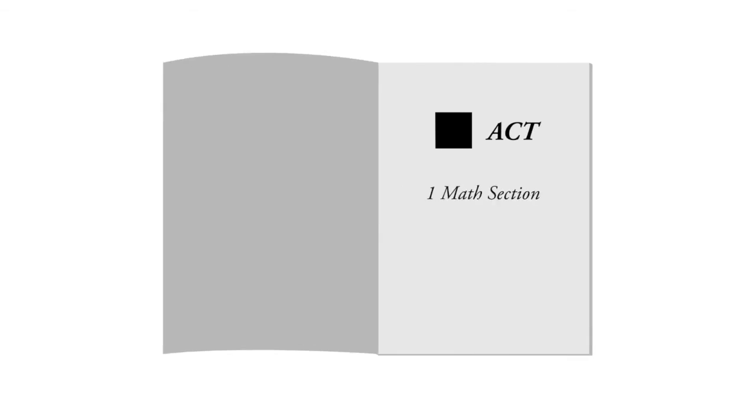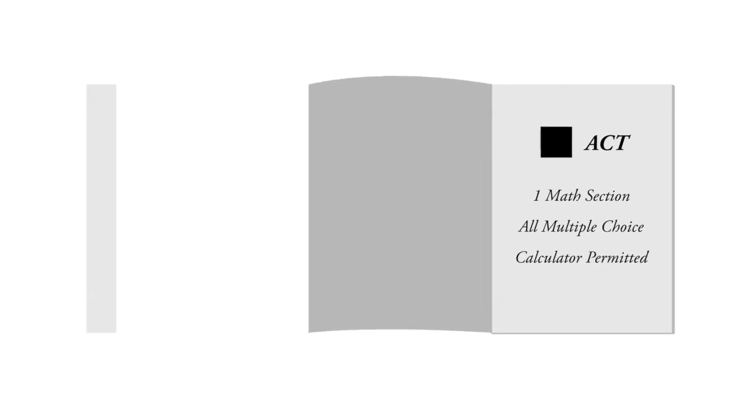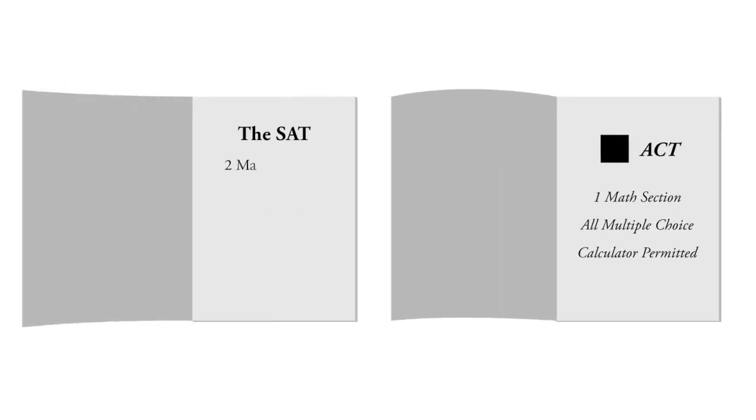On the ACT, there's only one math section. It's all multiple choice and a calculator is permitted on all of it. On the SAT, there are two math sections. One allows you to have a calculator and one does not allow you to have a calculator.